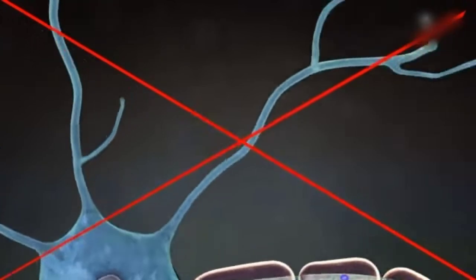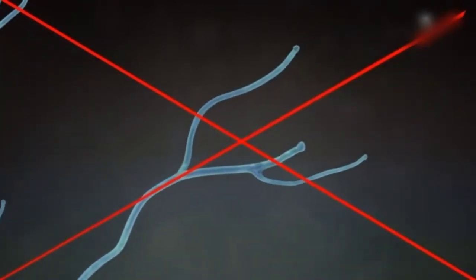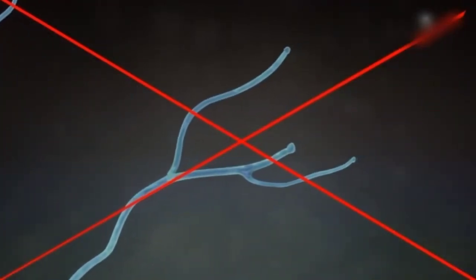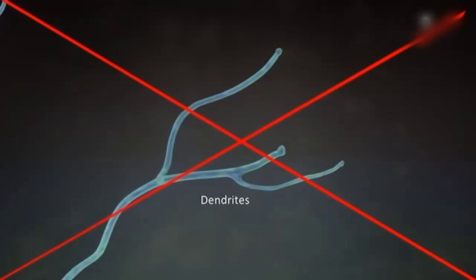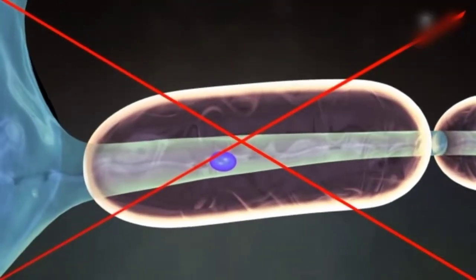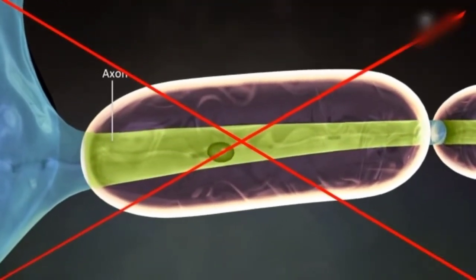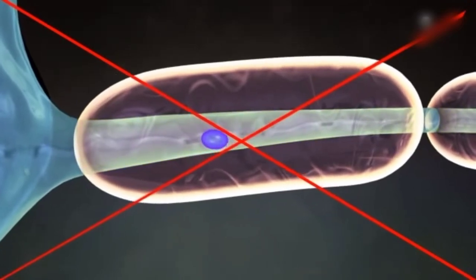There are several thin, thread-like extensions from the cell body called dendrites. The other extension from the cell body or soma is a single branched extension called an axon.